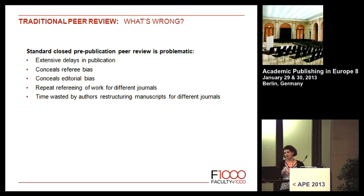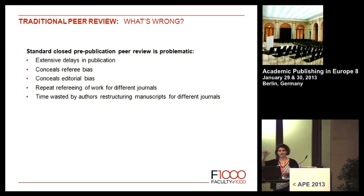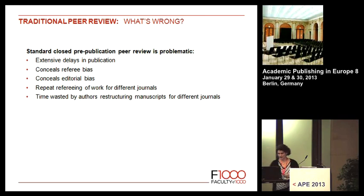The closed system also conceals a lot of referee bias — not only holding things up, but being deliberately negative or indeed deliberately overly positive about an article — and editorial bias as well. Having to go down a cascade of journals means an article will be refereed, rejected, then other referees have to use their valuable time to referee it again, sometimes several times. And every journal has its own set of guidelines, so it takes a lot of time and effort for authors to keep restructuring their manuscripts.